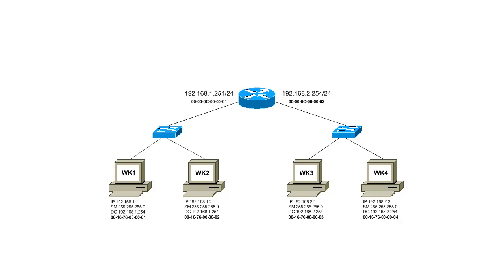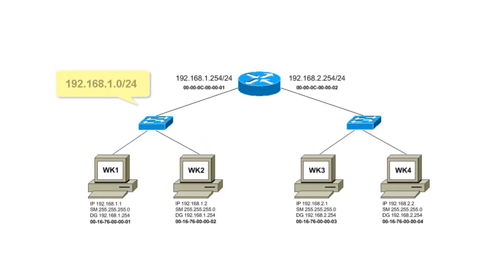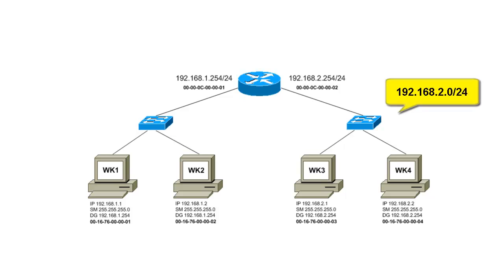Each subnet on each side of the router is defined by a 24-bit subnet mask. On the left side of this diagram you'll notice you have the 192.168.1 network, and on the right side you have the 192.168.2 network.